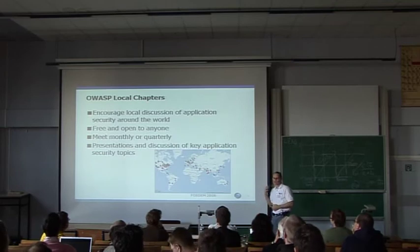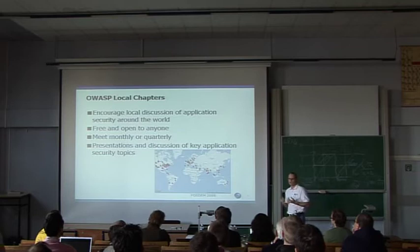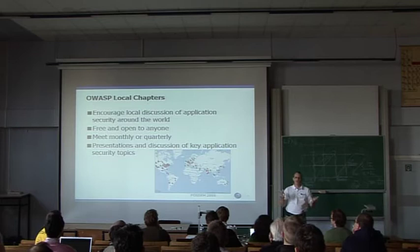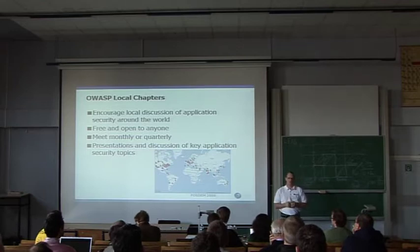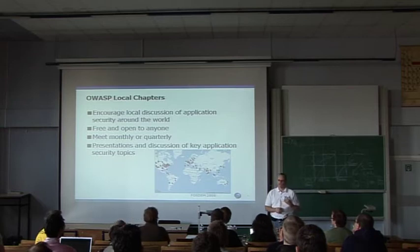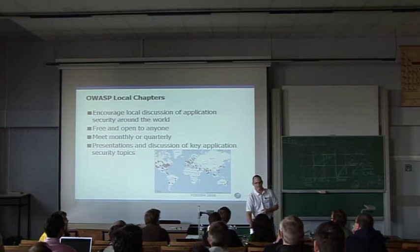Another of the important OWASP resources is the local chapters. The local chapters basically provide a forum for people interested in application security to get together and discuss what they're doing and how to do various things in the application security field. They're free and open to anybody to participate. Go to the OWASP site and see if there is a local chapter in your area — if there isn't, maybe you'd like to start one. They typically meet on a monthly or quarterly basis, with presentations and discussions of key application security topics.